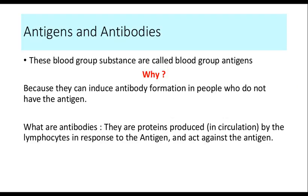An antigen is any substance capable of producing an antibody in the recipient. If an RBC carrying a particular antigen is given to a person who doesn't have that antigen, the recipient identifies it as foreign and produces antibodies against it to destroy those RBCs. The person who is negative for a blood group will identify the positive blood group as foreign and try to destroy it — his WBCs produce what are called antibodies. Antibodies are produced in response to antigens.